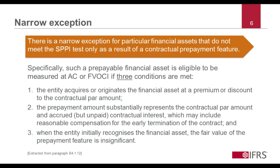Of course, the scope of this exception is not limited to purchased credit impaired financial assets. But it's important to stress that this exception applies only to those financial assets that meet all three conditions set out on this slide. So for example, unless the prepayment amount meets the second condition set out on the slide, which includes the usual requirement that any compensation is reasonable compensation for the early termination of the contract, the fact that the fair value of a prepayment feature is insignificant because prepayment is very unlikely does not enable the financial asset to be eligible for measurement at amortized cost or fair value through other comprehensive income.